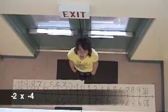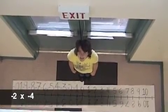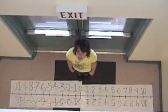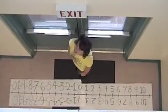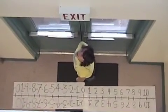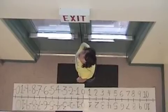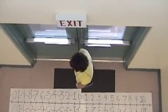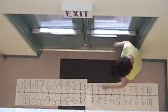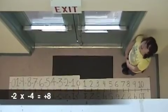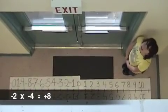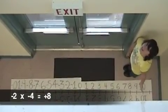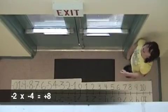Negative 2 times negative 4. The first number tells me to face the negatives, and the second number tells me to move backwards because it's a negative. I jumped negative 4 lines 2 times. So now I'm at positive 8, so that's the answer.